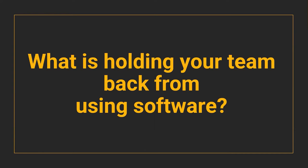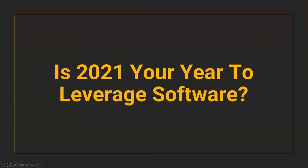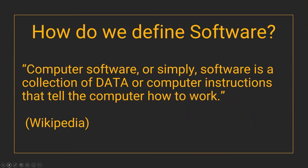One thing we can do to help out with that is software. What is holding your team back from using more software? How can your team leverage more software this year? Let's start with basics — how we define software. From Wikipedia: computer software is a collection of data or computer instructions that tell the computer how to work. Pretty simple — it's the instructions telling the machine what you want it to do.